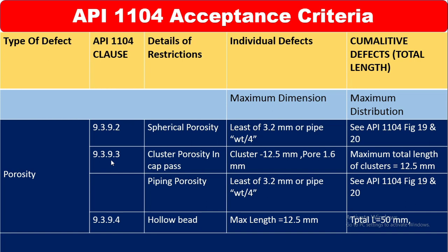Piping porosity: for individual defect, the maximum dimension is the least of 3.2 mm or pipe wall thickness divided by 4. For cumulative defects, refer to API 1104 figures 19 and 20. Clause 9.3.9.4 is hollow bead porosity — the maximum individual defect dimension is 12.5 mm, and the cumulative acceptable length is 50 mm.